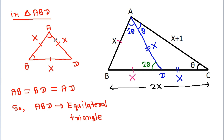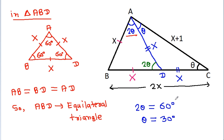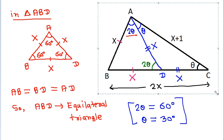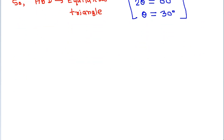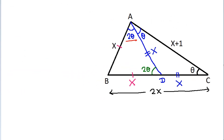So all three angles will be 60 degrees. So 2θ is 60 degrees, that means θ will be 30 degrees. So 3θ will be 90 degrees.